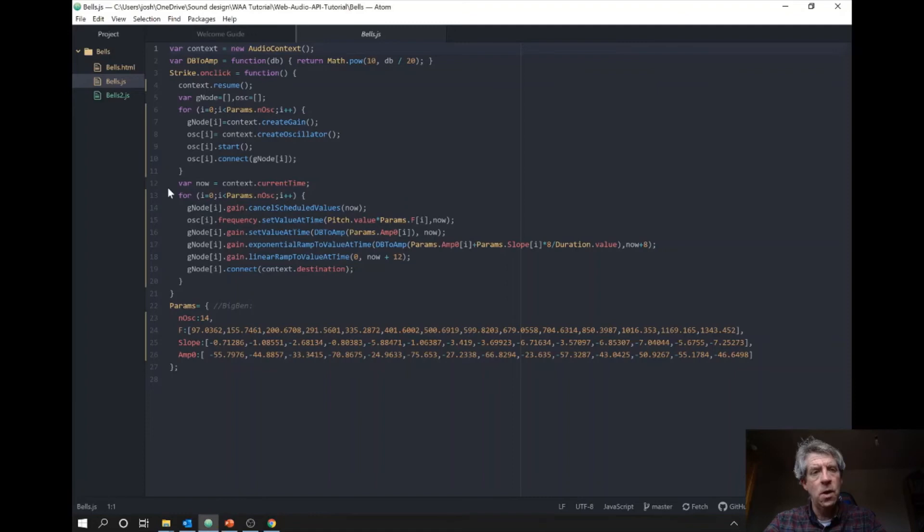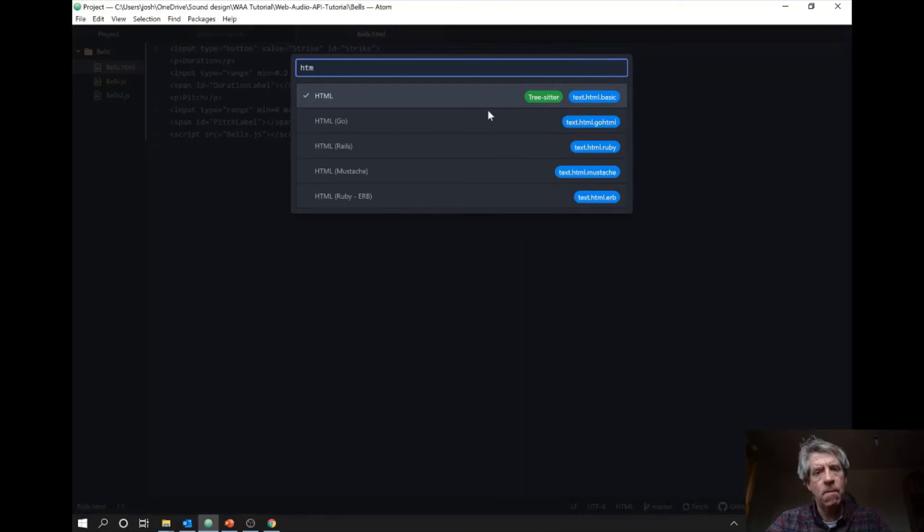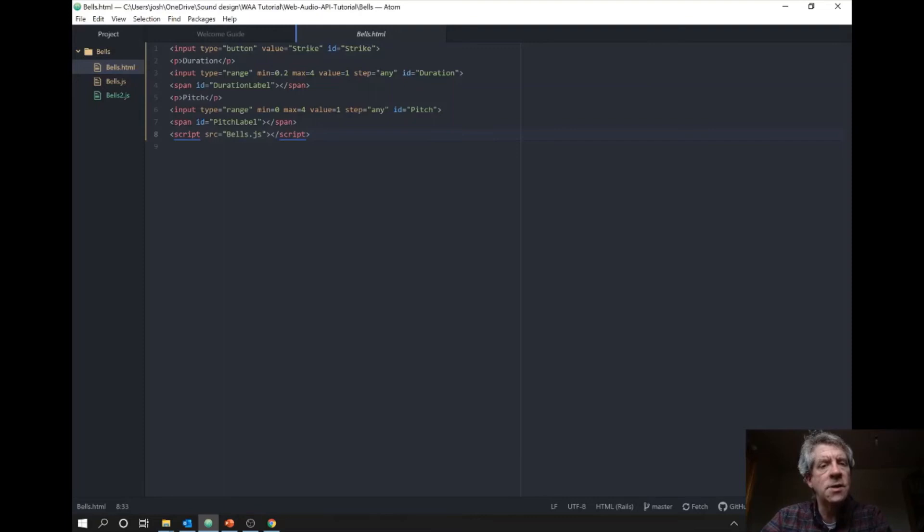So let's look at the code. Here's bells, and I have it available for you in the GitHub repository accompanying the slides. First we have the HTML file. Here is the HTML code, and it's quite simple. We have a single button for striking the bell, then we can adjust the duration—we can scale it so that it's much slower, only one-fifth or 0.2 times the actual duration as it was in the recording, or we can increase it to up to four times as long.